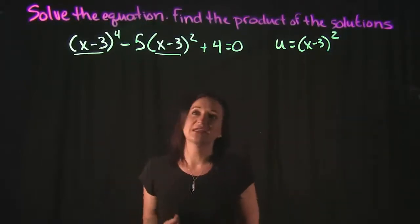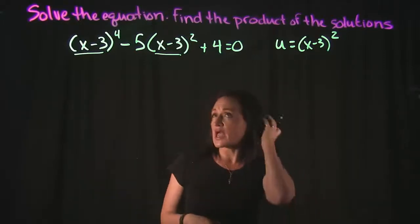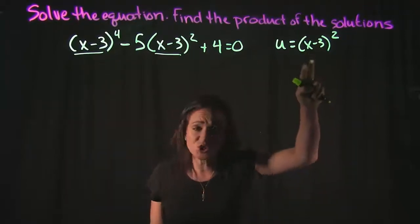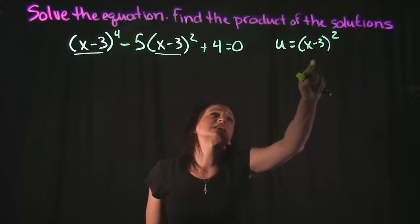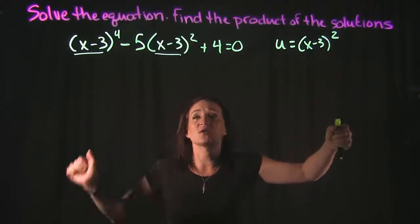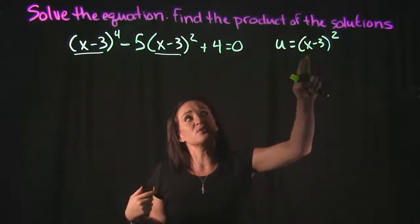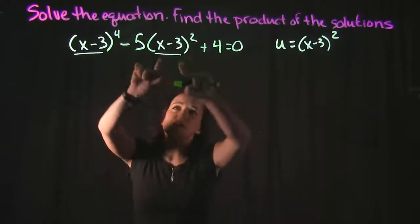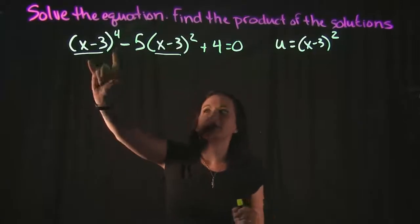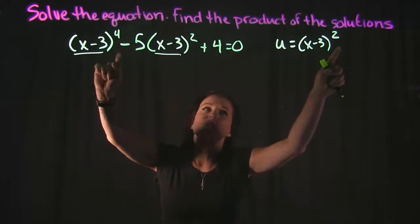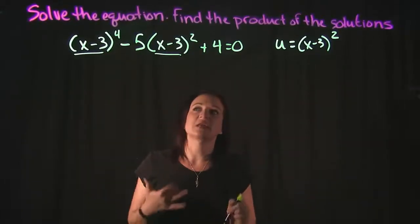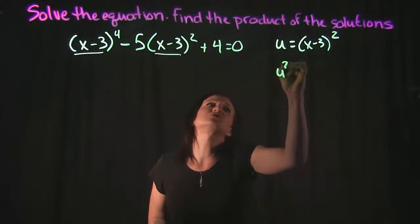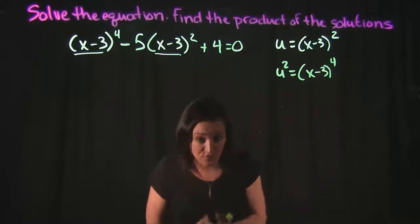So I'm going to let u equal x minus 3 squared. That will clean this problem up nicely. For the first term, x minus 3 to the fourth, notice that's just two copies of x minus 3 squared multiplied together. So I'm going to claim that u squared is the same thing as x minus 3 to the fourth.